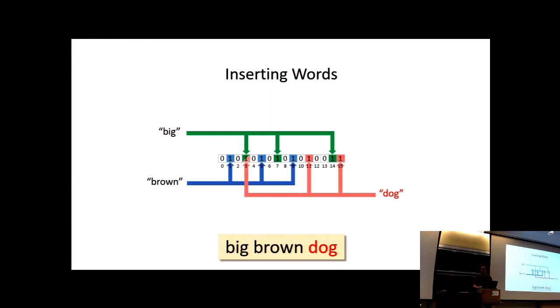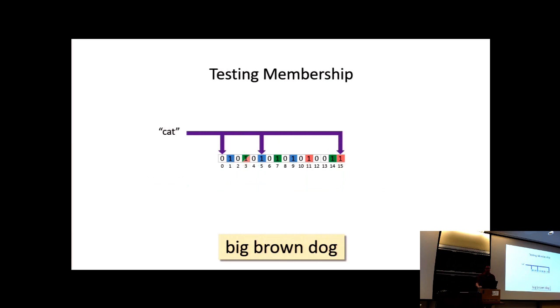Testing for membership involves probing each of the hash functions for set bits. Suppose I want to test for the word cat. In this case, one of the three bits is zero, so we know that cat cannot be a member of the set. When we test for big, all three of the hashes map to ones, so we report it as a possible match. Why do I say possible? Well, consider the case of house. Its hashes all map to ones, so we report it as a possible match, even though house was never added to the set. The term brown contributed two of the set bits, and dog contributed another. This is what we call a false positive.